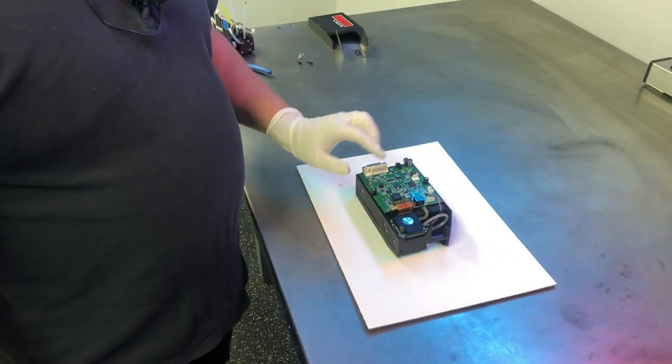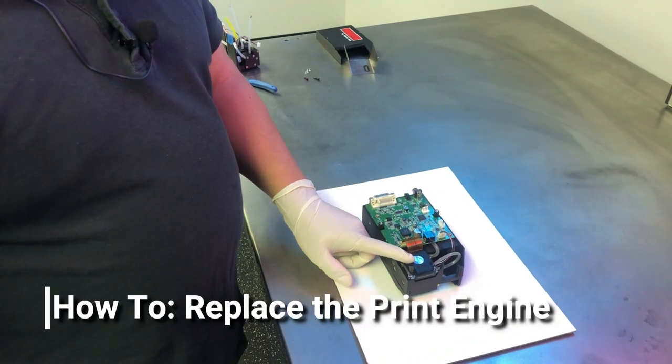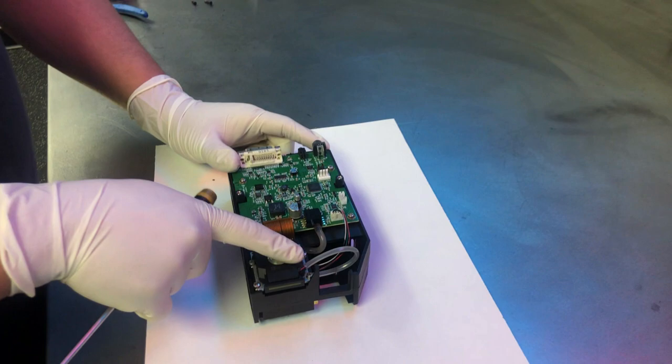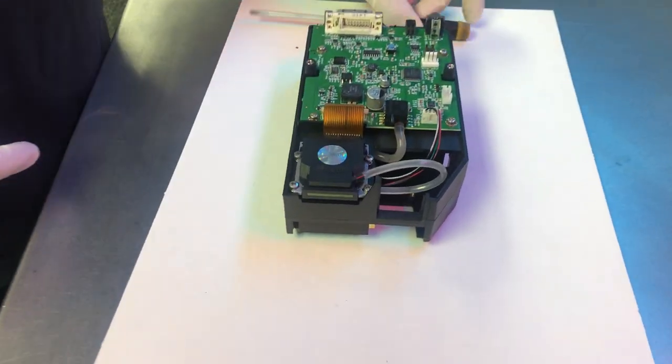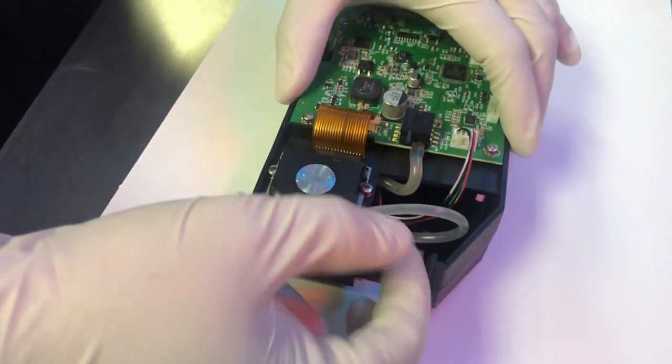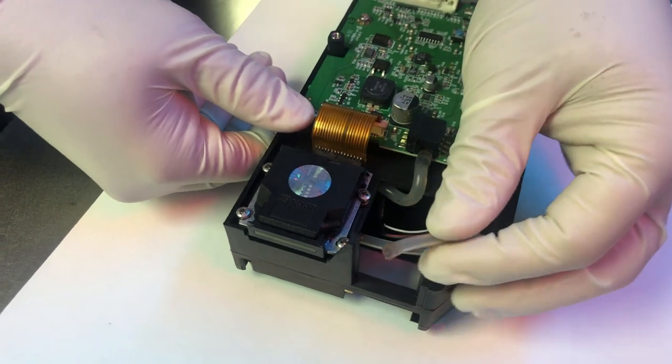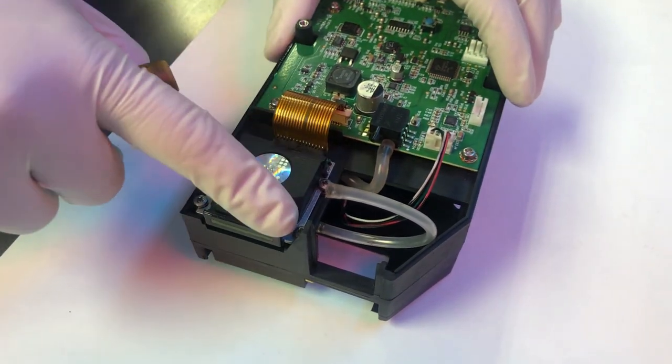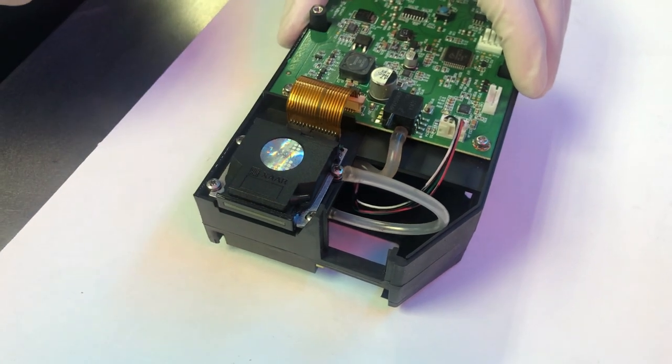Right now we're going to replace the 128 print engine. First thing we're going to want to do is disconnect the ink line going to the print engine itself. The next thing we'll do is remove the four screws that hold the print engine in place.